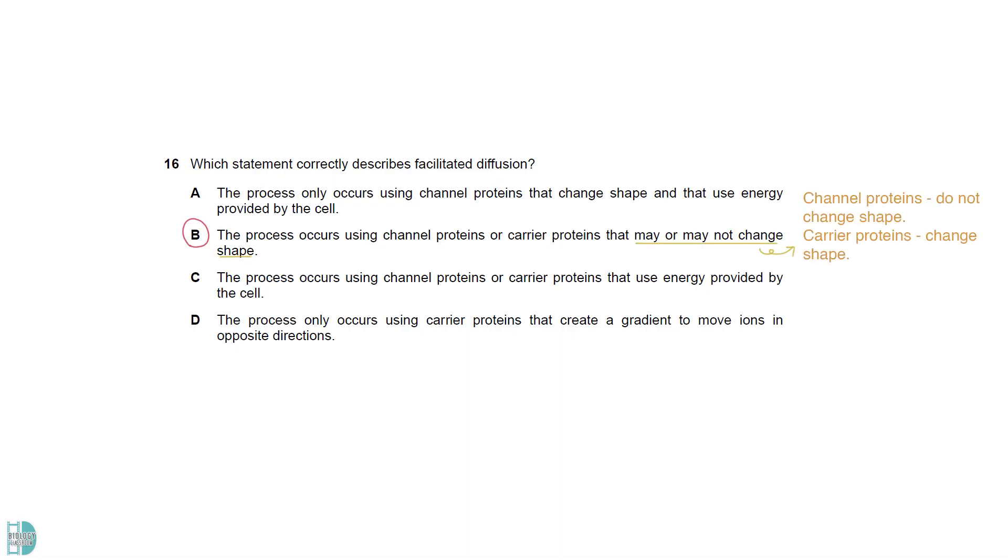B is the correct definition. Channel proteins do not change shape while carrier proteins do. A and D are wrong because they state that only one type of transport protein is possible. Facilitated diffusion is a passive movement. No energy is required.